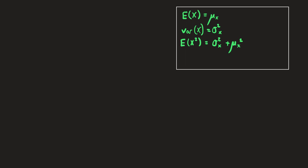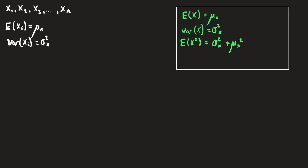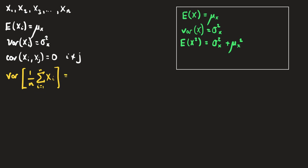We have observed n independent and identically distributed observations x1, x2, x3, up to xn. Because they are iid, E[xi] = μx for all i, Var(xi) = σ²x, and the covariance between xi and xj equals zero for all i ≠ j. We also know that the variance of the sample mean is σ²x / n.